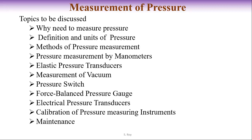Next I will discuss methods of pressure measurement. After that I will enter the discussion of different types of pressure measurement one by one — pressure measurement by manometer, by elastic type pressure transducer, different ways to measure vacuum, what is a pressure switch, what is a force balance pressure gauge, different types of electrical pressure transducer, and how pressure measuring instruments can be calibrated and maintained.